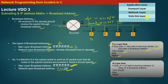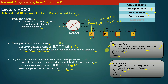When the network layer receives the packet from the data link layer, it imposes the IP rule on the packet to decide whether to accept or reject it. The IP layer rule says: if the destination IP address equals the IP address of the receiving interface, or the destination IP address is a broadcast address, accept the packet; otherwise reject it. Accepting means the network layer chops off the network layer header and passes the rest to the transport layer.